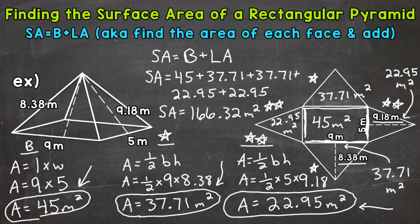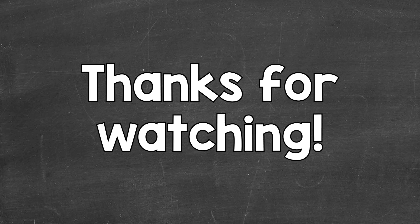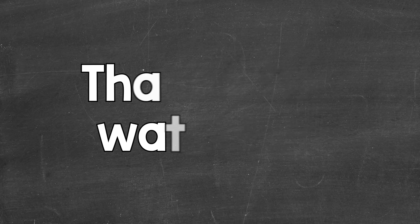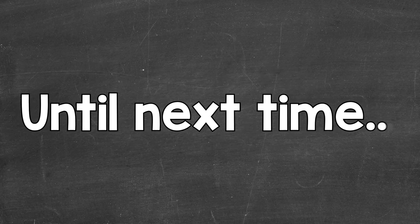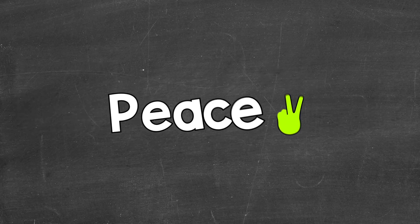The total surface area equals 166.32 square meters, and that is our final answer. There's how you find the surface area of a rectangular pyramid. I hope that helped. Thanks so much for watching. Until next time — peace.